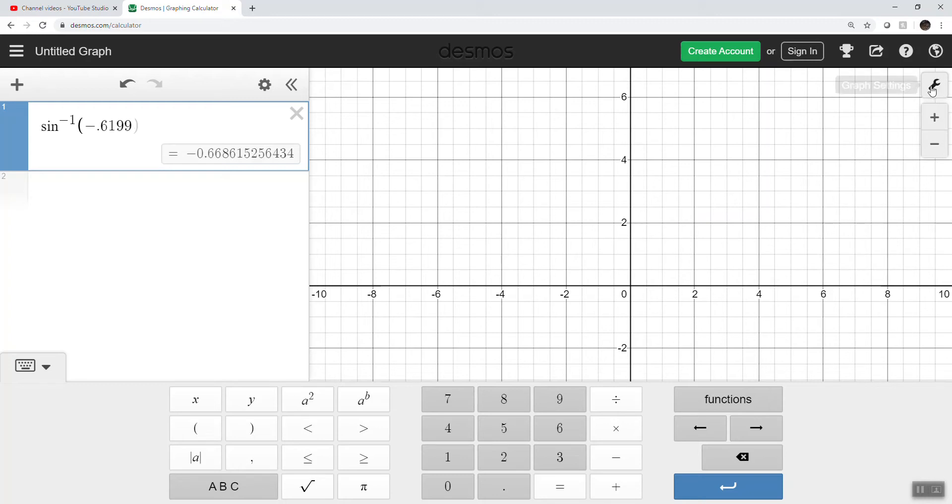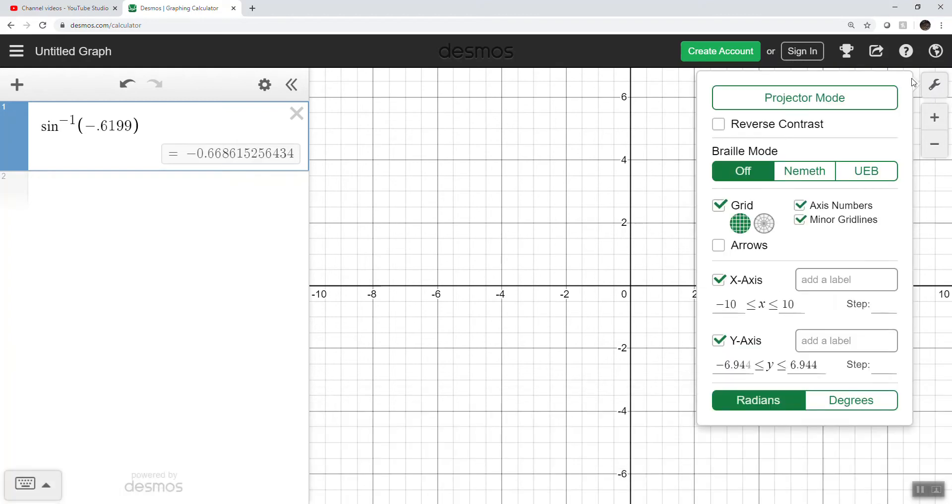So let me show you, when you hit this wrench button, here you will see whether you're in radians or degrees. So now I've changed it to degrees, it automatically changes our value into degrees. And that's negative 38.309.